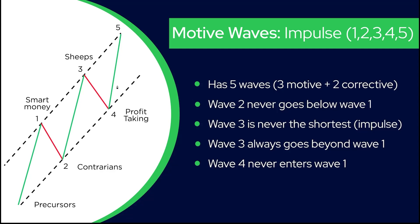Let's begin with the impulse. The impulse is the most iconic pattern of Elliott Wave theory — it's something you see everywhere. It has five waves. First rule: three motive waves and two corrective waves — waves one, three, and five are the motive waves shown in green, because this is a wave up and what is going up is motive. Waves two and four are the corrective waves. This is the first rule of an impulse.